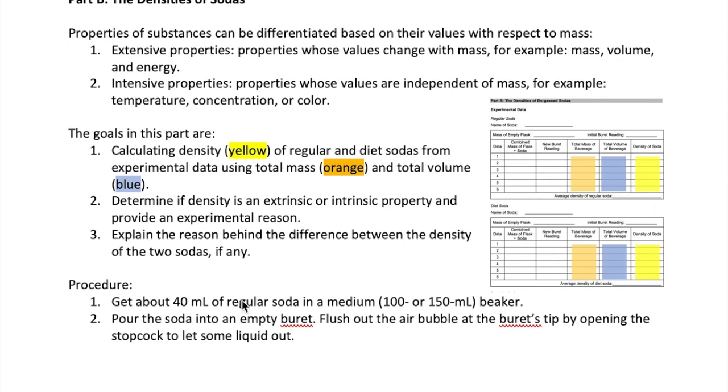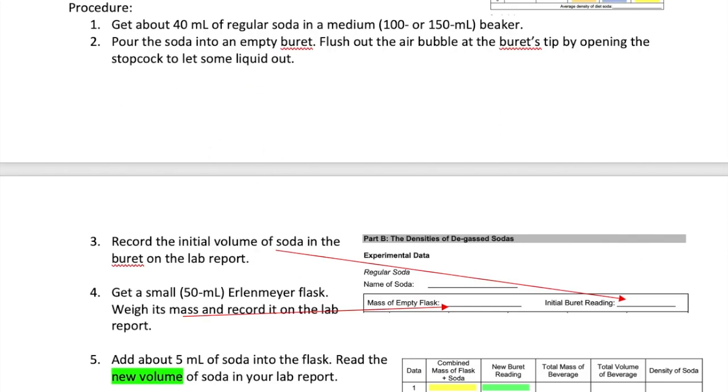Let's go through the procedure. First, you need to get enough soda to do the entire experiment, which is about 40 milliliters. Use a medium beaker as your container. Pour the soda into a clean burette and flush out the air bubbles from the tip. Now you are ready to use the burette. Record the initial volume of the soda here, and then get a small glass and measure the mass of that empty glass and record it here.